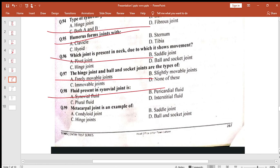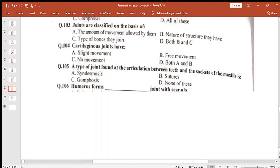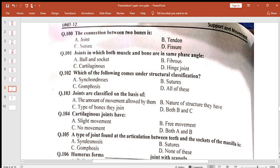Hinge joint and ball and socket joint are types of freely movable joints. Fluid present in synovial joint is called synovial fluid. Metacarpal is an example of hinge joint. The connection between two bones: joint.